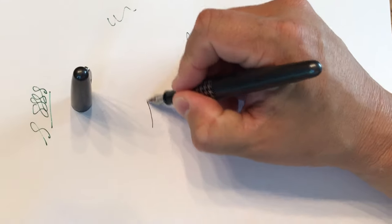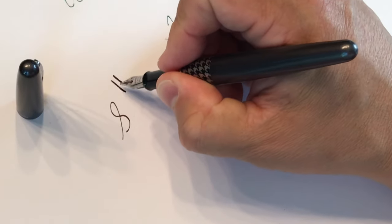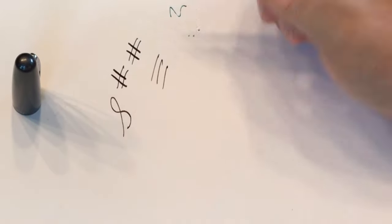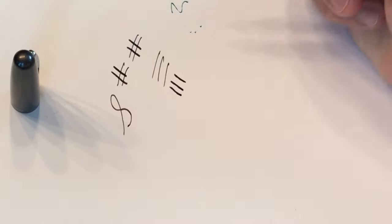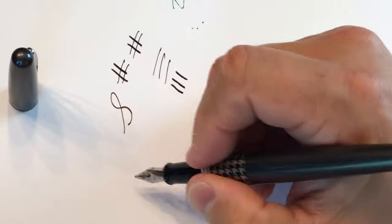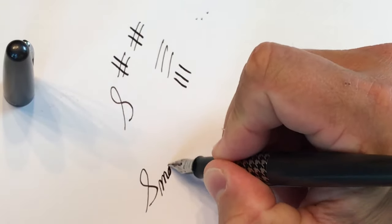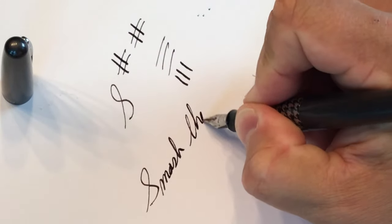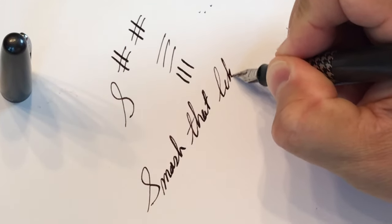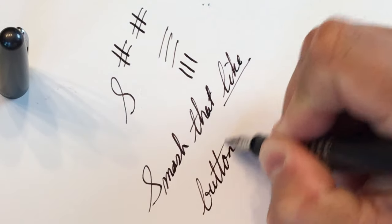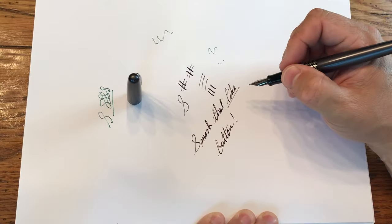So if I were to write with this, you can kind of see that the back and forth writing is very thin. The top down writing is thick. So if I were to write something like, smash that like button, that's what it would look like.